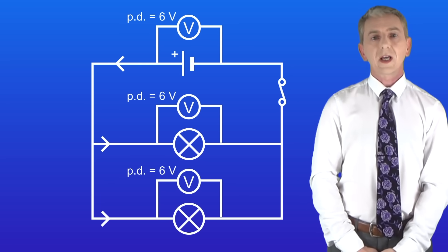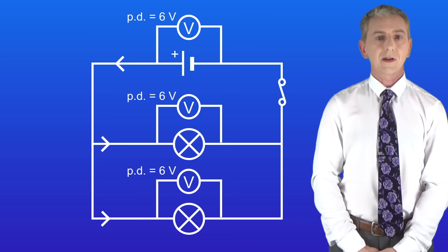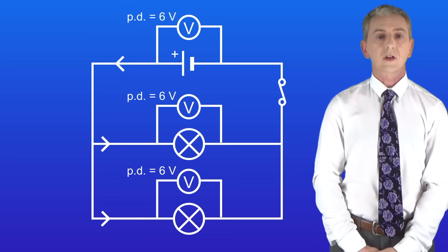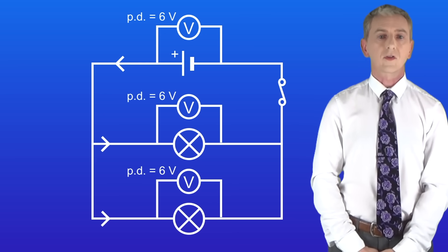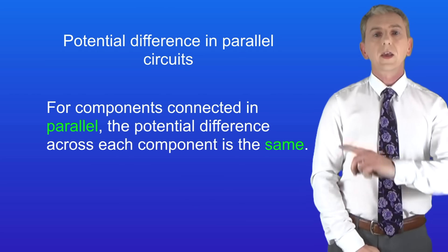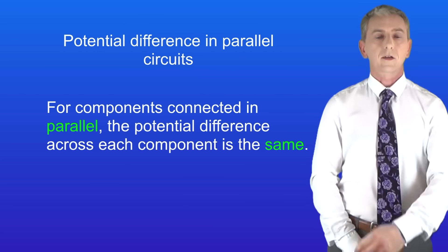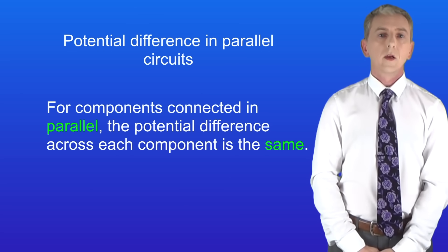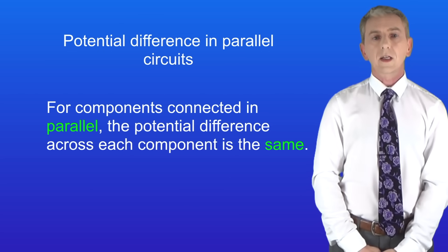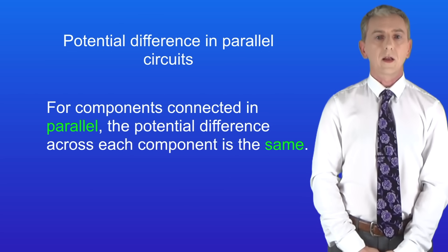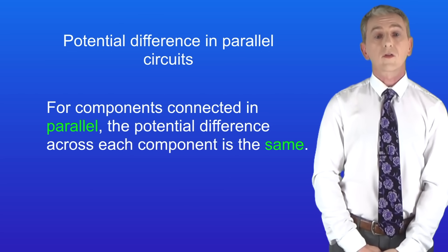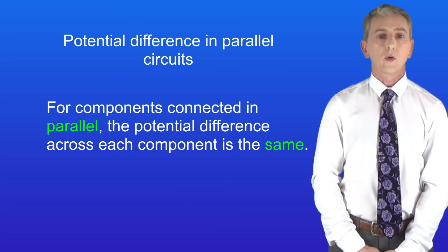So as you can see, potential difference in parallel circuits is not like potential difference in series circuits. Here's the key fact: for components connected in parallel, the potential difference across each component is the same.